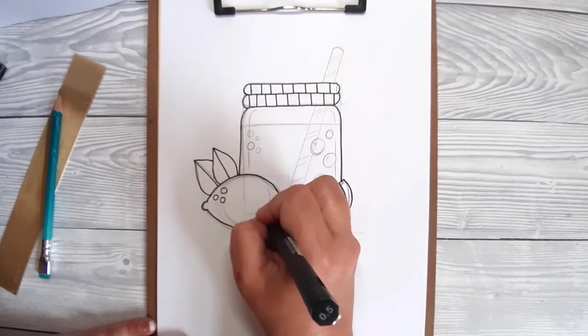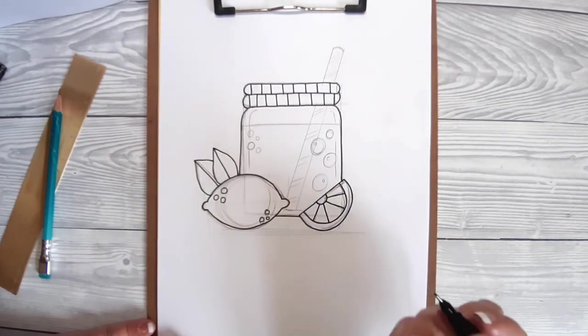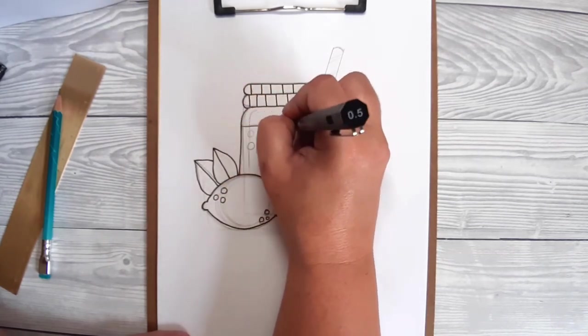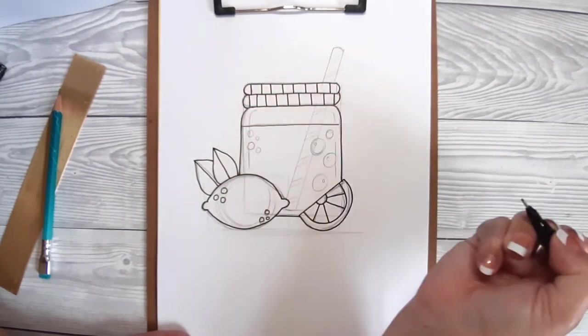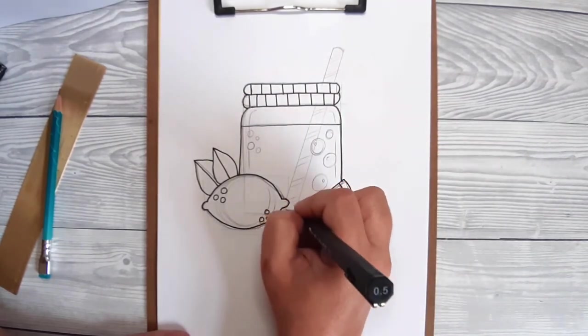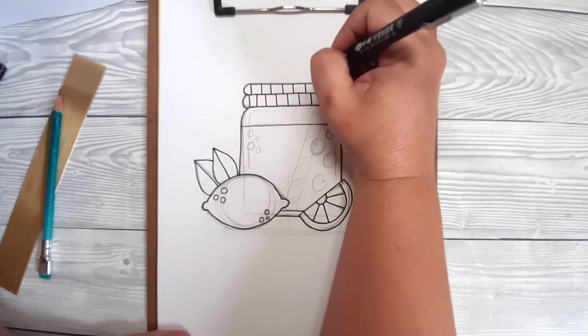When it's something like the leaves where I know that I want to have lines coming from the center of the leaf to the outside, then I might use my pen straight away. But more often than not it's safer to use the pencil so that you know what you're drawing looks right or not.